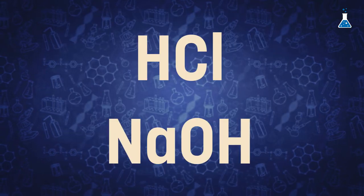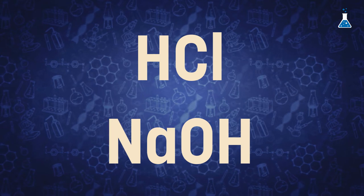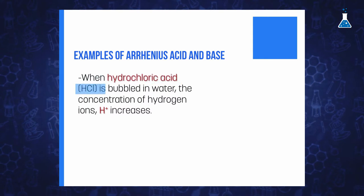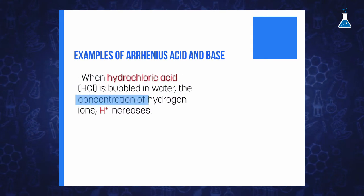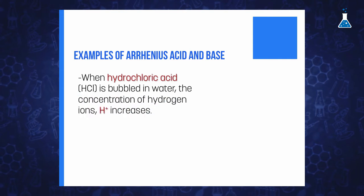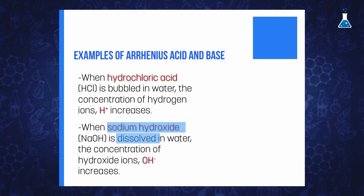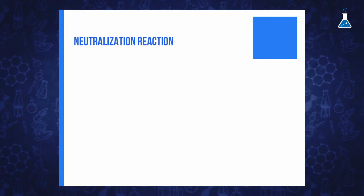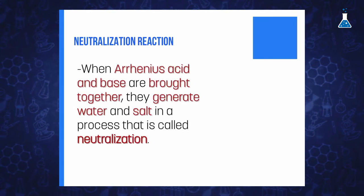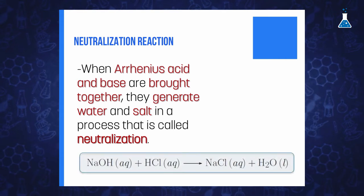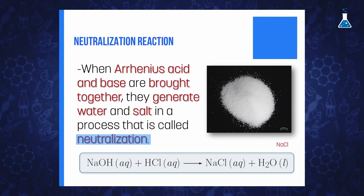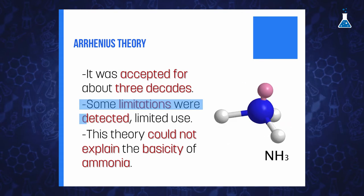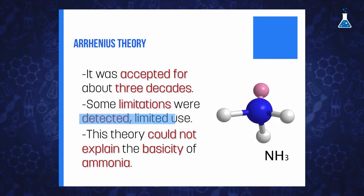Simple examples of Arrhenius acid and base substances would be hydrochloric acid and sodium hydroxide. When hydrochloric acid is dissolved in water, the concentration of hydrogen ions increases due to HCl dissociation, and when sodium hydroxide is dissolved in water, it gives sodium ion and hydroxide ion. When an Arrhenius acid and an Arrhenius base are brought together, they generate water in a process called neutralization. Arrhenius' theory was accepted for about three decades, but some limitations were detected.